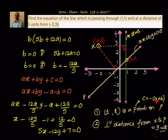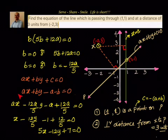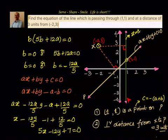So our approach was: we used the fact that (1,1) is on the line to get a + b + c = 0, then wrote c = -(a + b). We then applied the perpendicular distance formula to get b = 0 or b = -12a/5. Substituting these back gave us two equations: x = 1 and 5x - 12y + 7 = 0. That's one interesting example — thanks for your time and support. Please let me know your feedback. Bye for now.